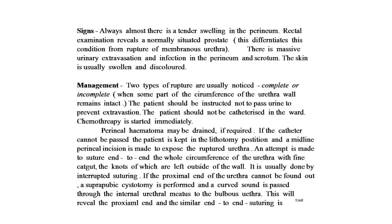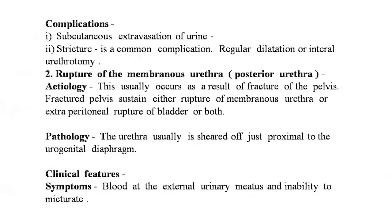If the catheter cannot be passed, the patient is kept in the lithotomy position and a midline perineal incision is made to expose the ruptured urethra. An attempt is made to suture end to end the whole circumference of the urethra with fine catgut, with knots left outside the wall, using interrupted suturing. If the proximal end cannot be found, a suprapubic cystostomy is performed and a curved sound is passed through the internal urethra to the bulbar urethra to reveal the proximal end, and end-to-end suturing is performed. Complications include subcutaneous extravasation of urine and stricture, managed by regular dilation or internal urethrotomy.